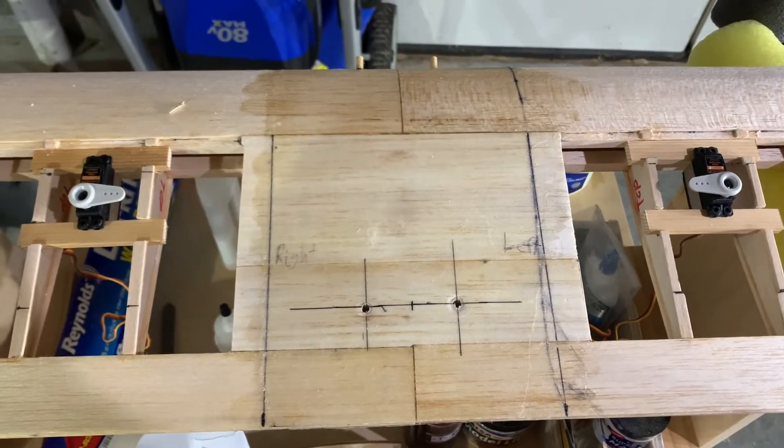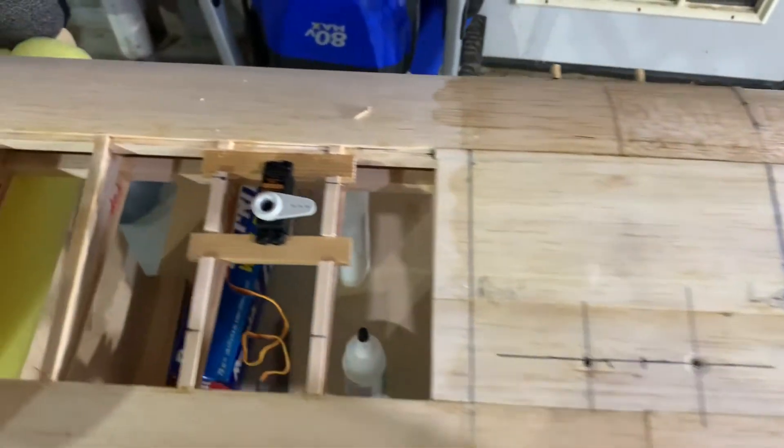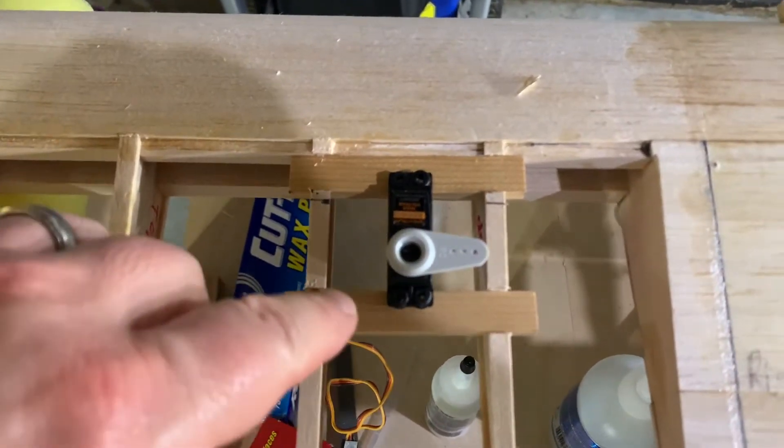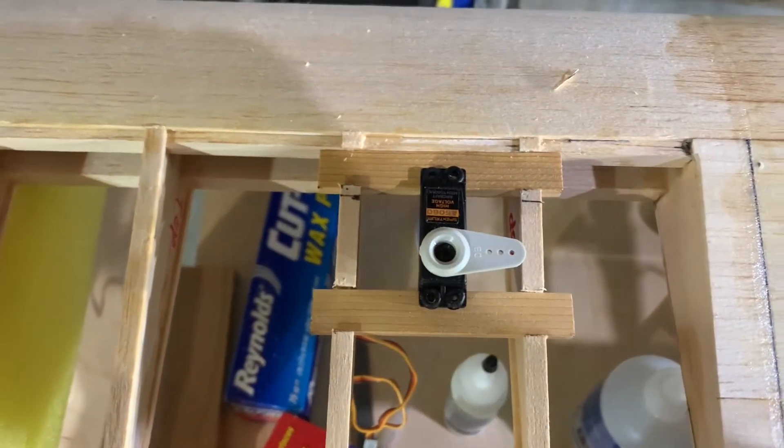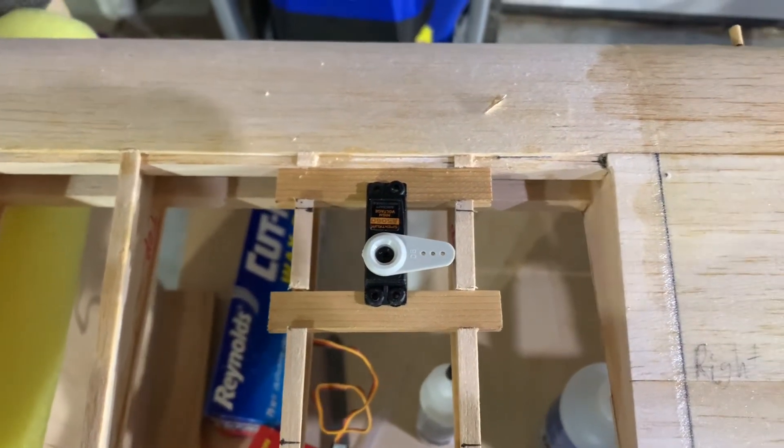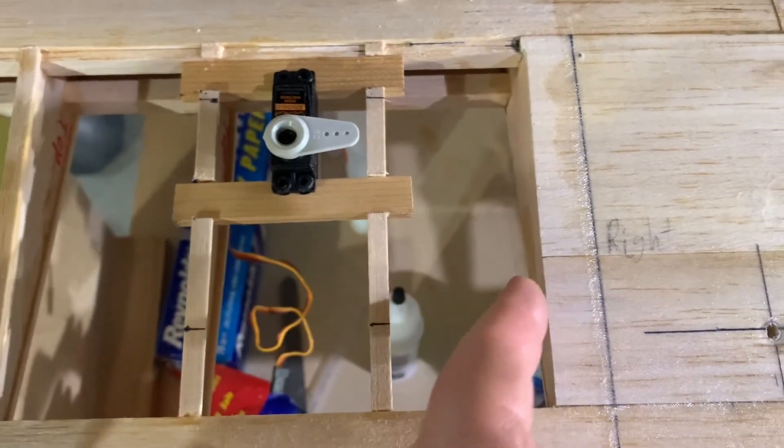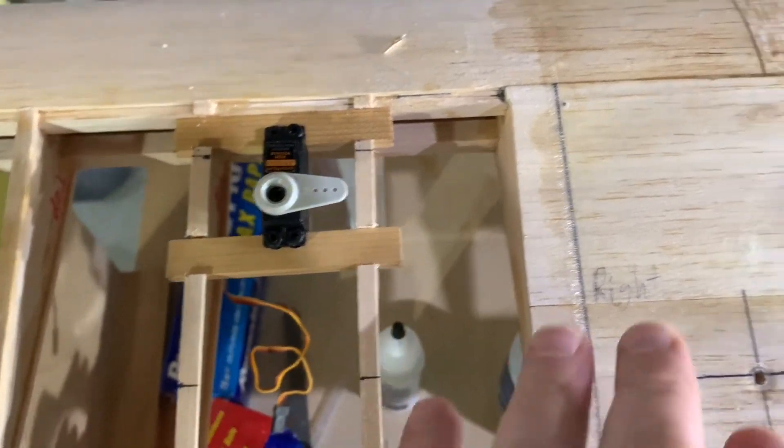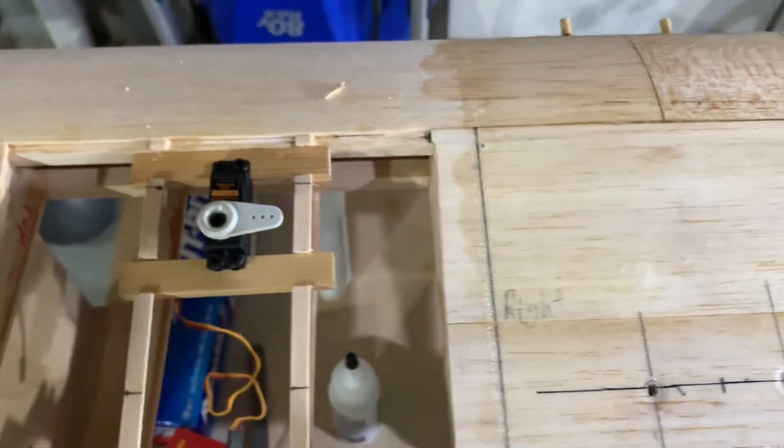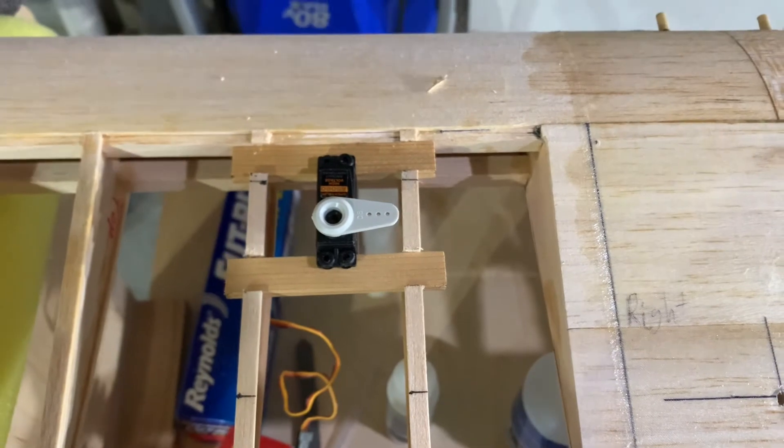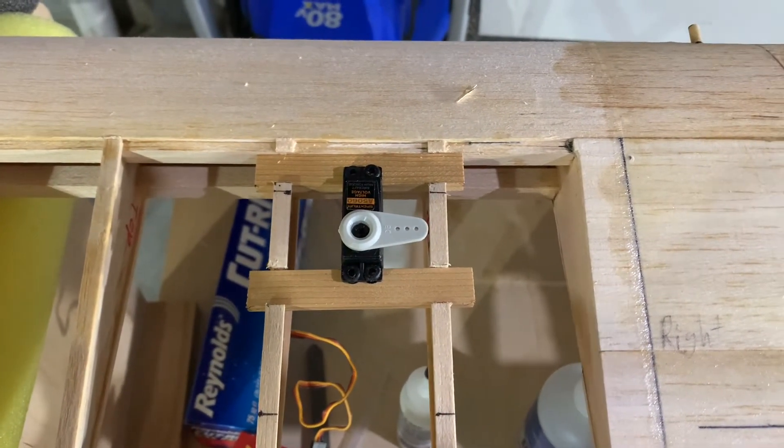As we continue your update, you can see we've got both servos installed. So now what we need to do is build up this around this frame with some 3/32 balsa, and then that'll be completely finished. Oh, we have to do one more thing after that too - we've got to cut some slots in the ribs so we can take our servo lead and pass it through all the way to the center section. That way we'll be able to attach it to the receiver in the fuselage.